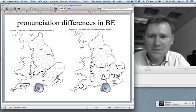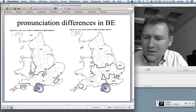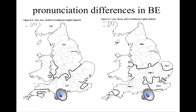Let me talk about pronunciation differences in British English. Traditional dialects in the British Isles pronounce words like 'son', 'bus', or 'mother' in different ways. Speakers in the south tend to say 'son' or 'bus', and speakers in the north tend to say 'sun' or 'bus'. I brought a little sound clip — the speaker says something like 'I mean, I'm lucky', and we can be pretty sure that the speaker lives up in the north.